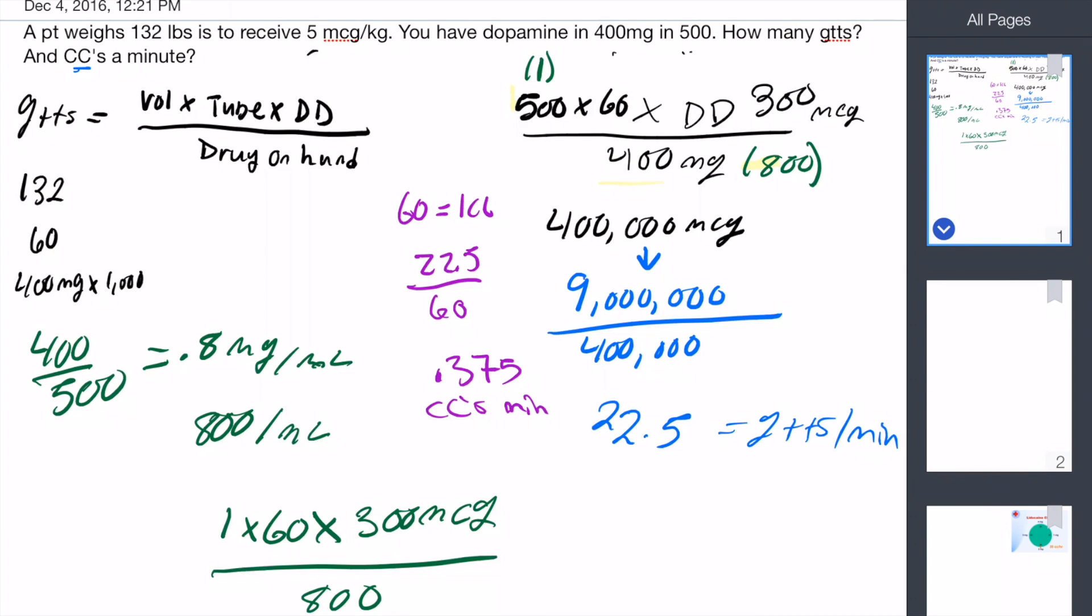So it's 1 times 60 times 300, that gives us 18,000 over 800. When you divide those out, you still get 22.5. So it works out the same.